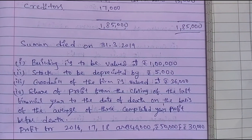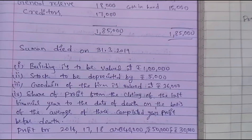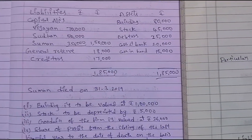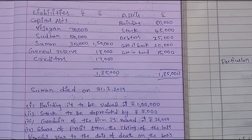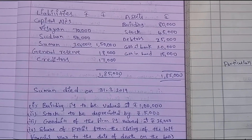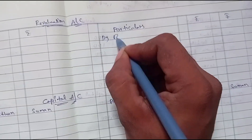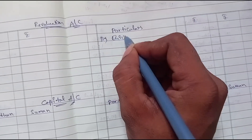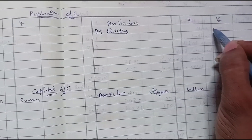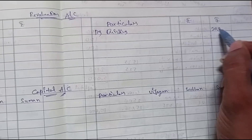First, building: balance sheet value is 80,000; current value is 1,00,000. There is an increase of 20,000. So, on the credit side, by building: 20,000.